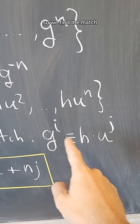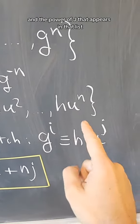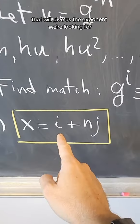It turns out there is a match between the two lists. We find the match, and the power of i that appears here and the power of j that appears in that list will give us the exponent we're looking for.